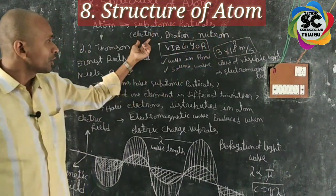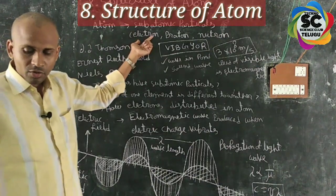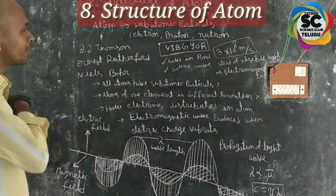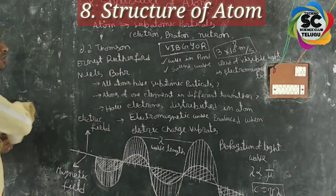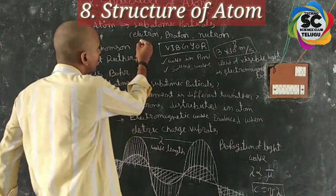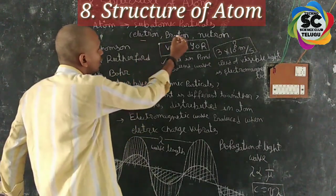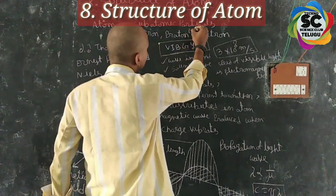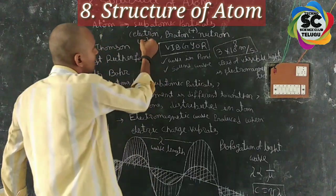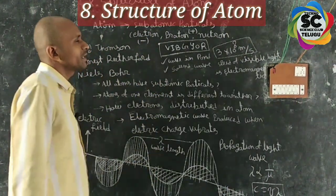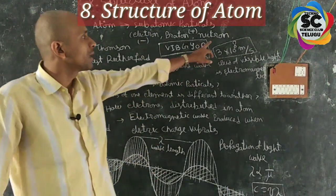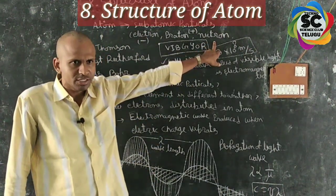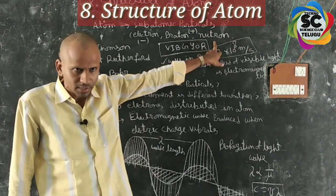Electrons are negatively charged, protons are positively charged, and neutrons have no charge. So, protons carry positive charge, electrons carry negative charge, and neutrons are neutral particles.